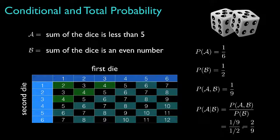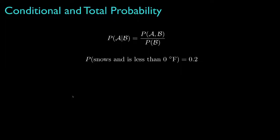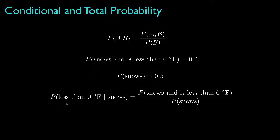This more general expression will work for all situations, not just for ones where we can count equally likely outcomes. For example, suppose we know the probability that it snows and the temperature is less than zero degrees Fahrenheit on New Year's Day in a particular town is 0.2, and the probability that it snows on New Year's Day is 0.5. We can then determine the probability that it's less than zero degrees Fahrenheit, conditional on it snowing, as 0.2 divided by 0.5, which is 0.4.